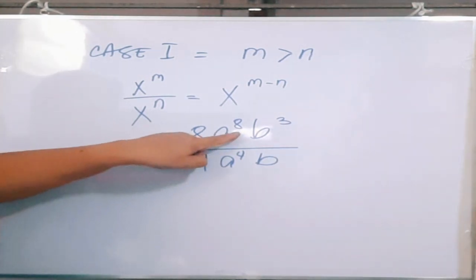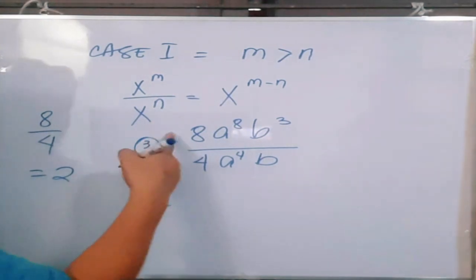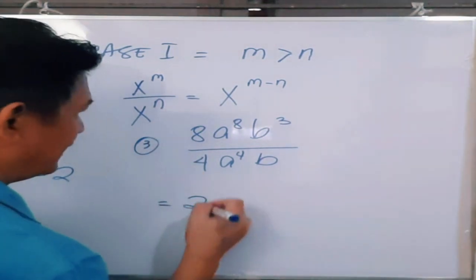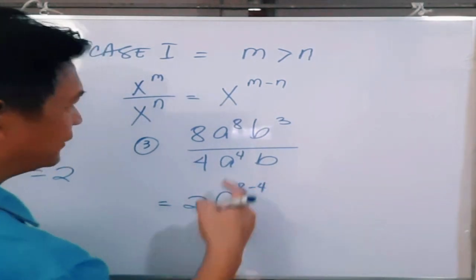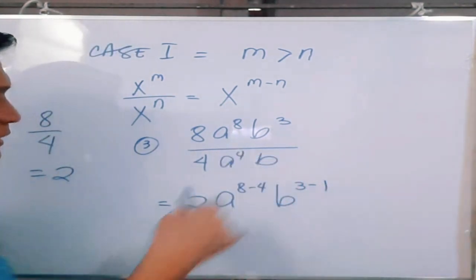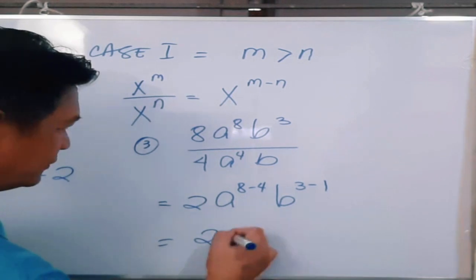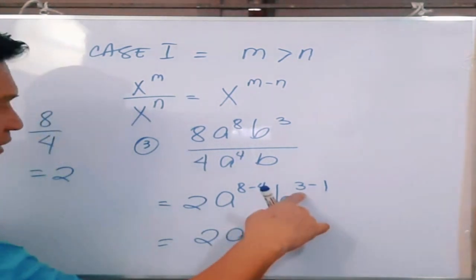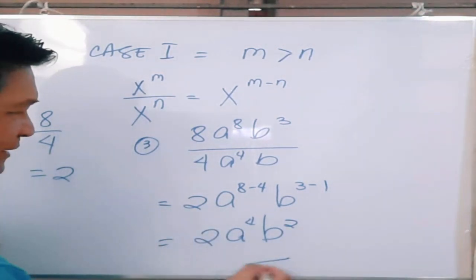Next is 8a raised to the eighth power b cubed all over 4a raised to the fourth power b. So we put 8 over 4, which equals 2. Then we subtract the exponents of your common base a: 8 minus 4. For common base b, you have 3 minus 1 because the exponent of b is 1. That gives us 2, a to the 4th, and b squared. So 8a⁸b³ all over 4a⁴b is equal to 2a raised to the fourth power b squared.